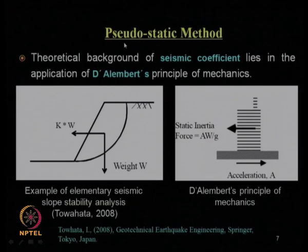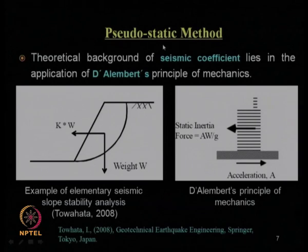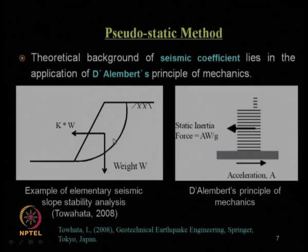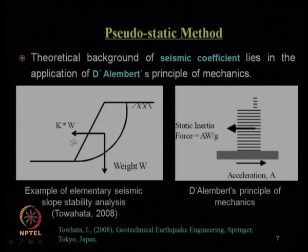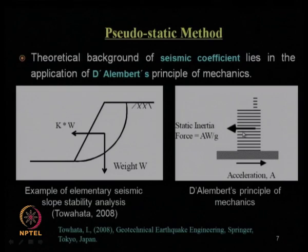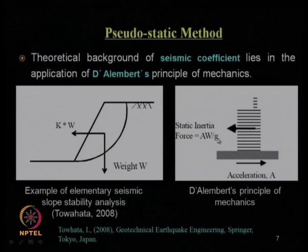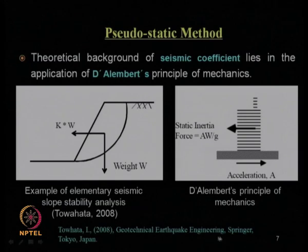We introduced the pseudo-static method, originally proposed by Terzaghi in the year 1950. This is a coefficient multiplied with respect to the failure soil mass, which gives the seismic inertia force — the additional destabilizing force. As we can see from d'Alembert's principle of mechanics, if there is an acceleration a, the corresponding equivalent static inertia force will be a·W/g, where g is acceleration due to gravity. The book by Tohata can be referred to for details.